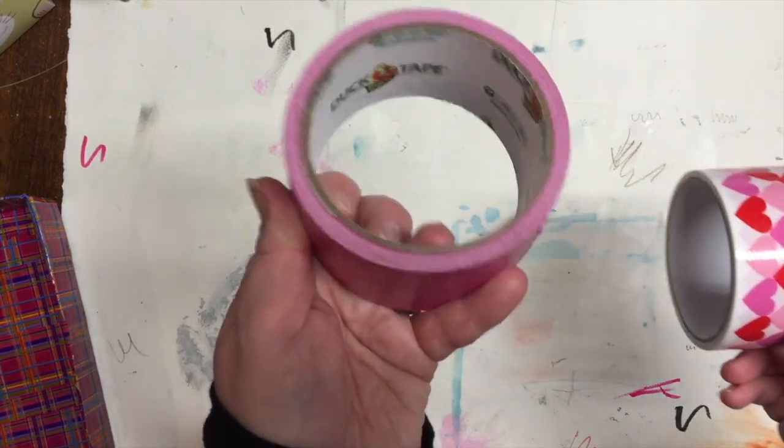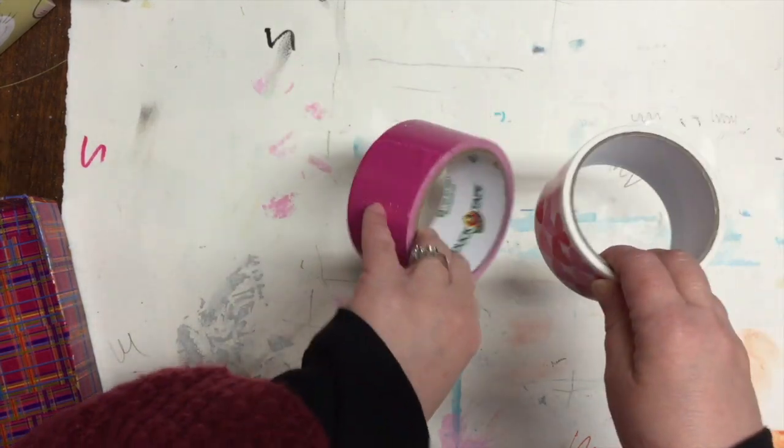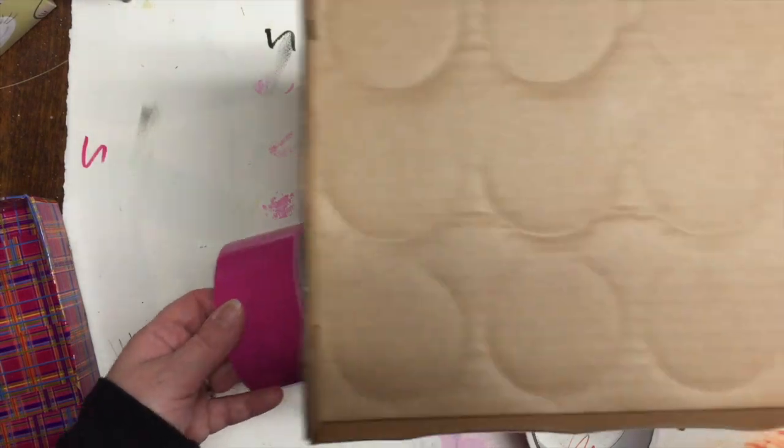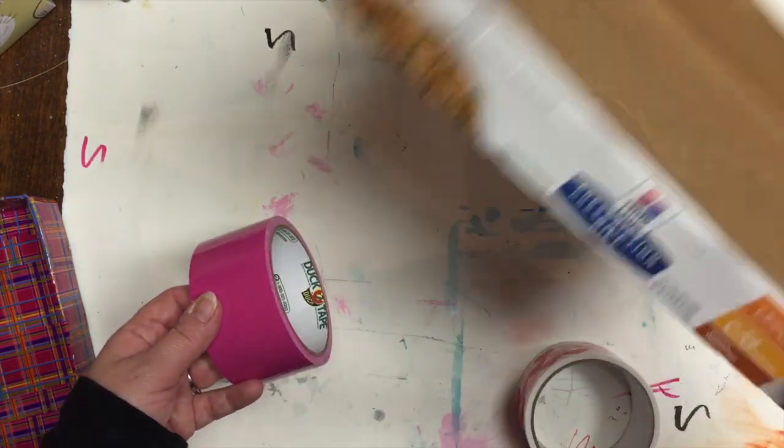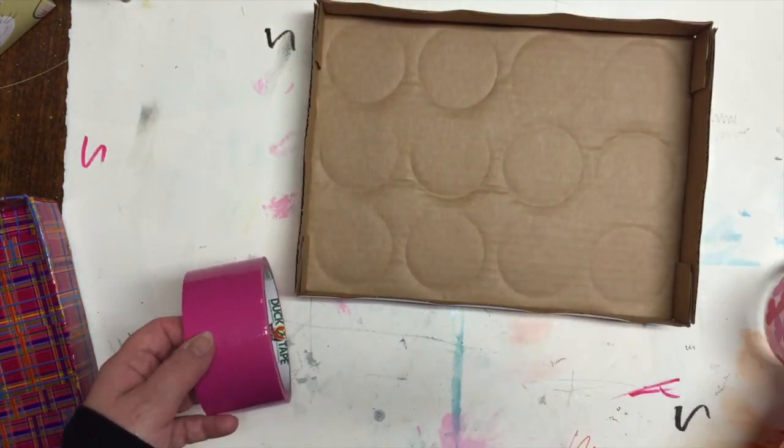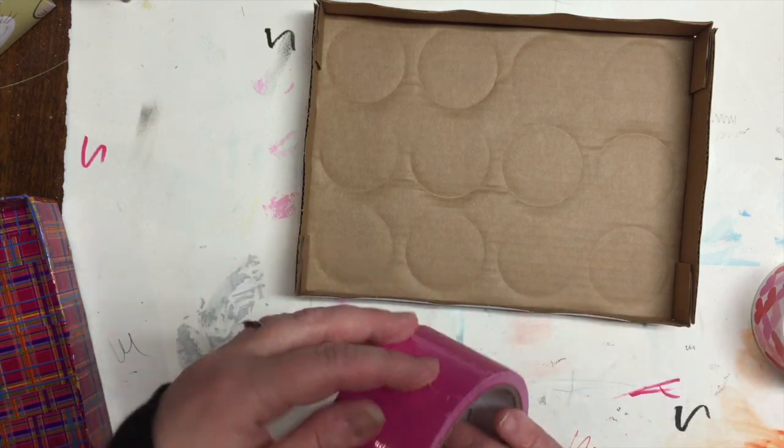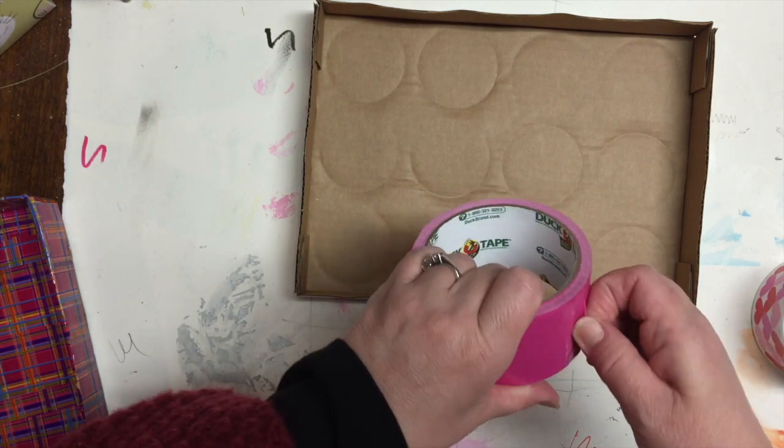So here I'm showing you - I'm using a Duck brand fuchsia tape and a dollar store brand with hearts on it for Valentine's Day. Why not? Let's make a tray for Valentine's Day for all those little Valentine's Day projects I'll be making.